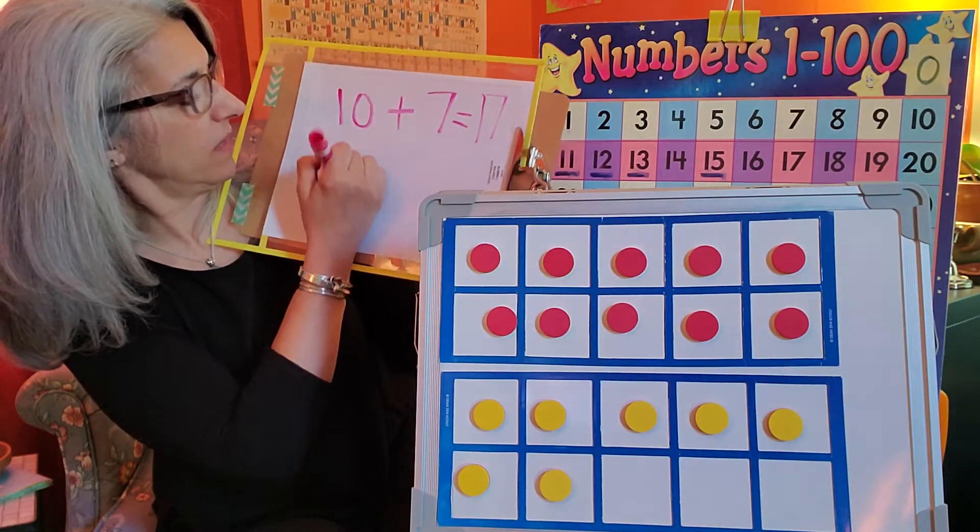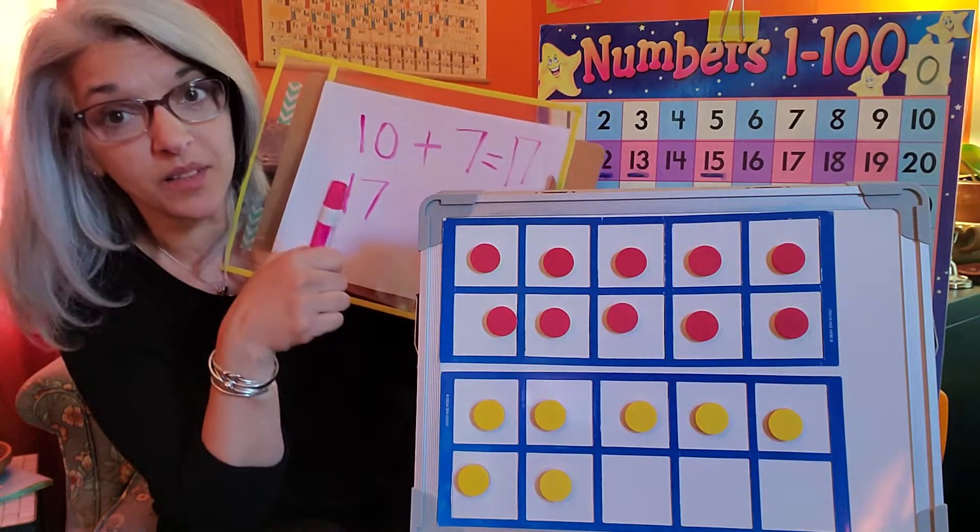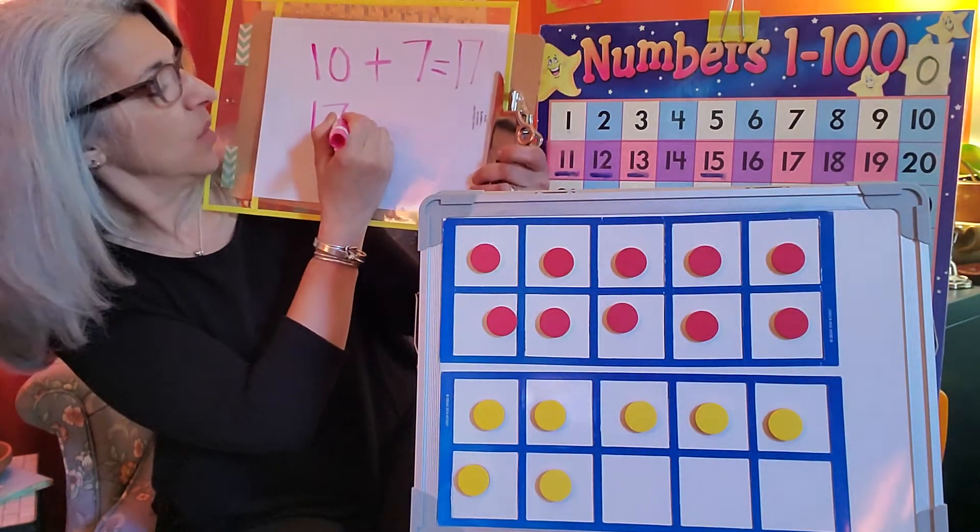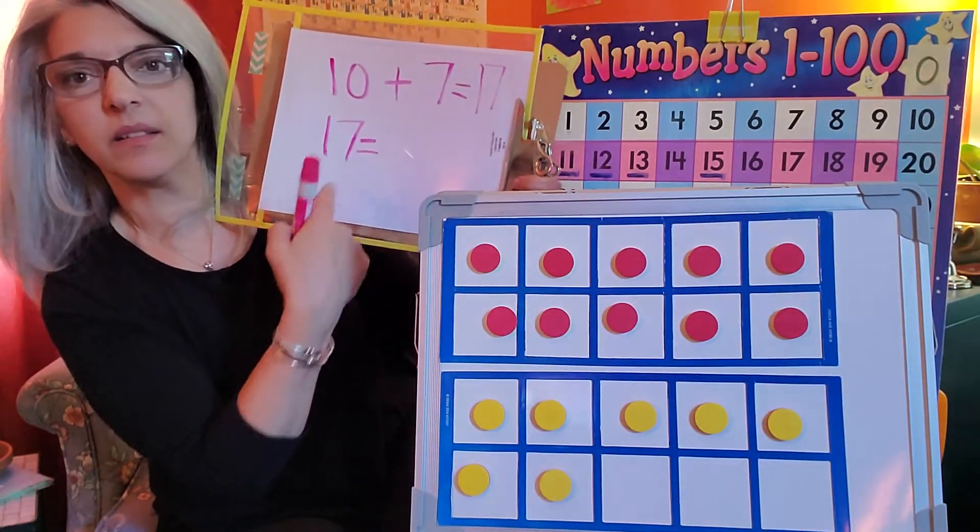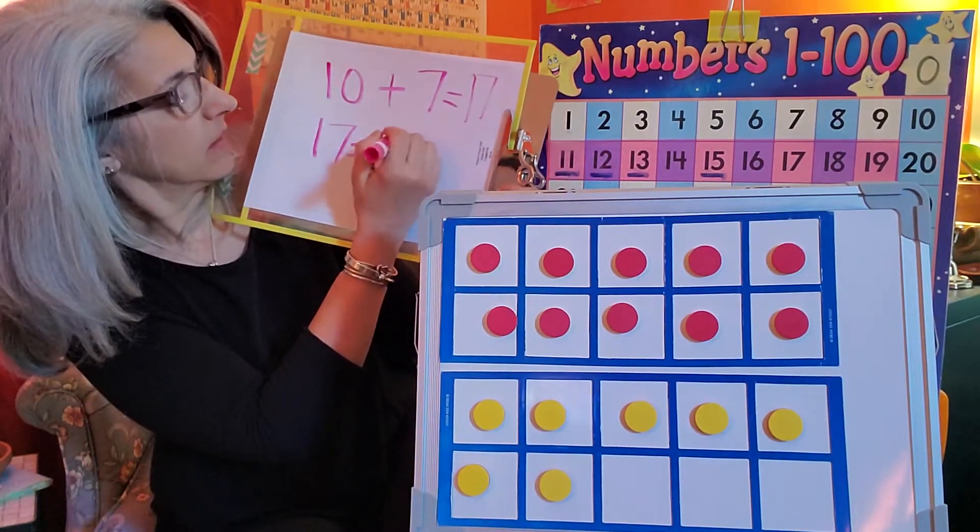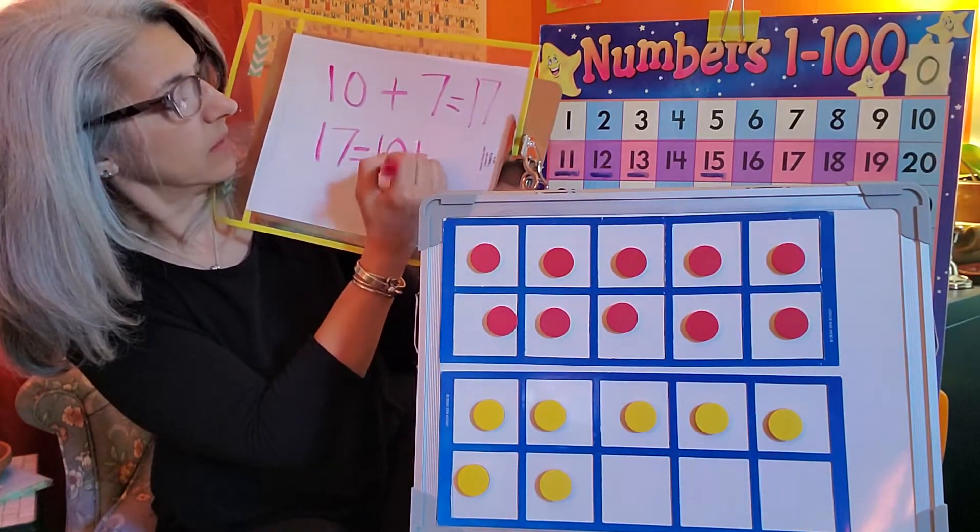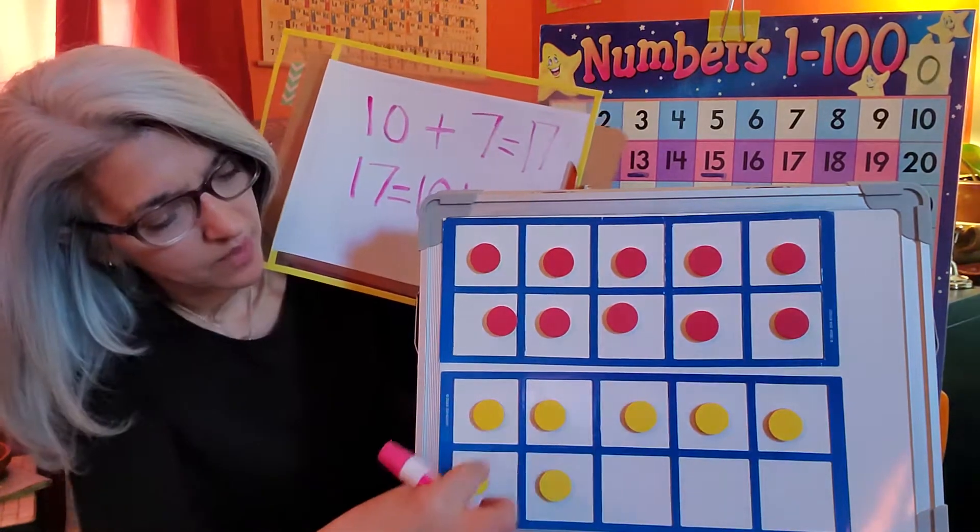If we were decomposing, which we are not focusing on today but just a reminder, we would start with seventeen. Seventeen equals ten plus how many more? Five, six, seven.